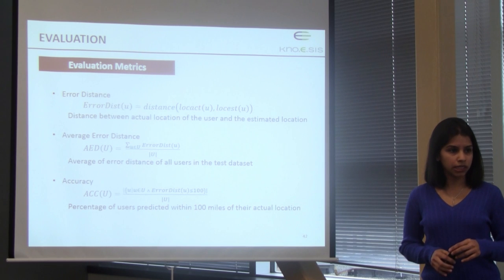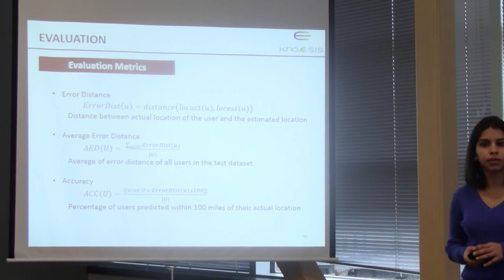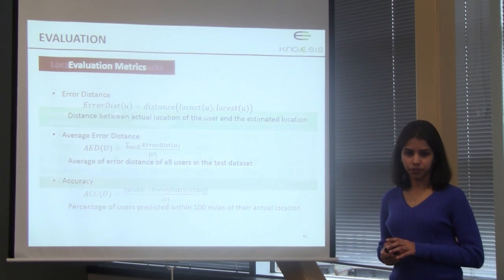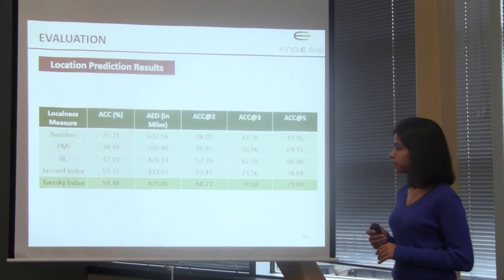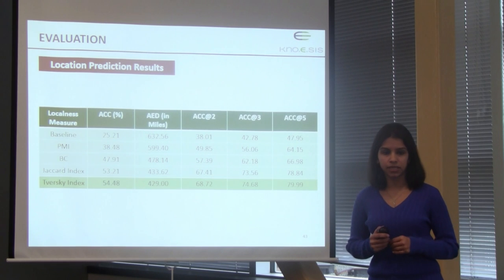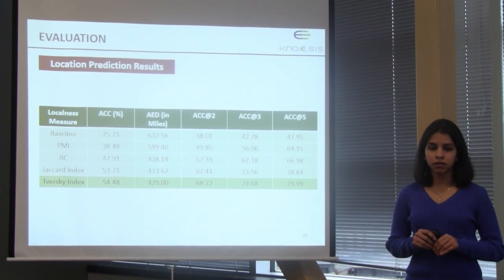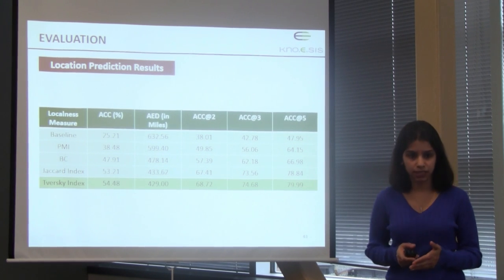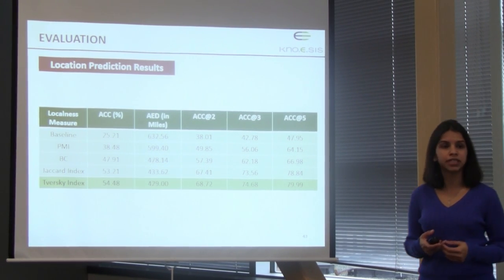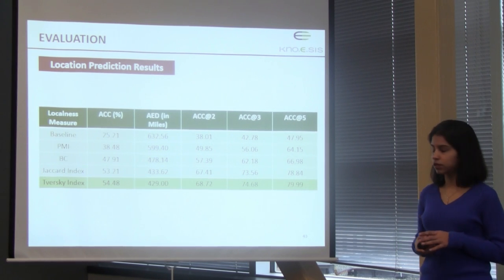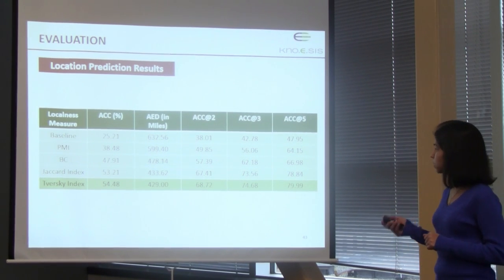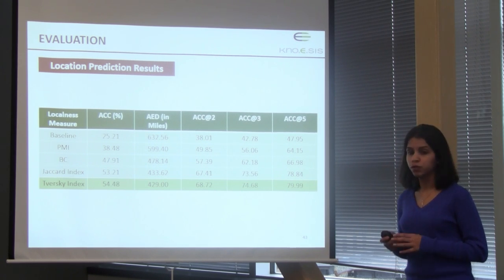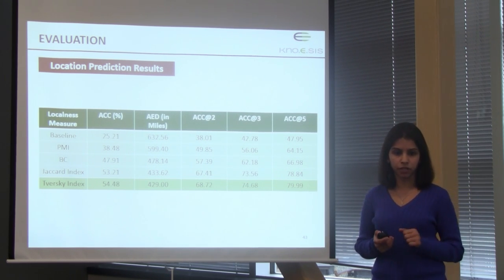The evaluation metrics are average error distance — the distance between actual and predicted location averaged across all users — and accuracy, the percentage of users predicted within 100 miles of their actual location. With Tversky Index as the localness measure, we achieve 54.48% of users predicted within 100 miles of their actual location.